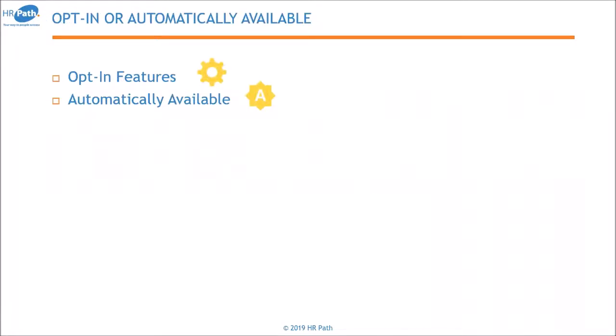There are two types of new releases available. The first are opt-in features, which require extra configuration — sometimes just ticking a checkbox, sometimes setting up a new business process or security features. The second type are automatically available features, which require nothing from you and will be automatically present in your production tenant from the release date.